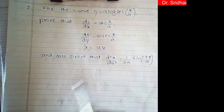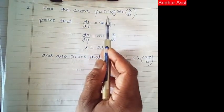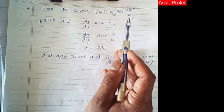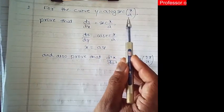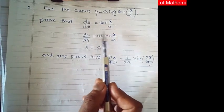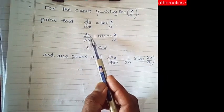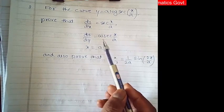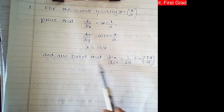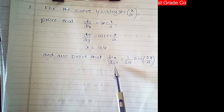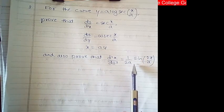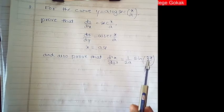So this is the given problem. One curve is given: y = a·log(sec(x/a)). For this curve, we have to prove that ds/dx = sec(x/a), ds/dy = cosec(x/a), then x = aψ, and also that d²x/ds² = (1/2a)·sin(2x/a).